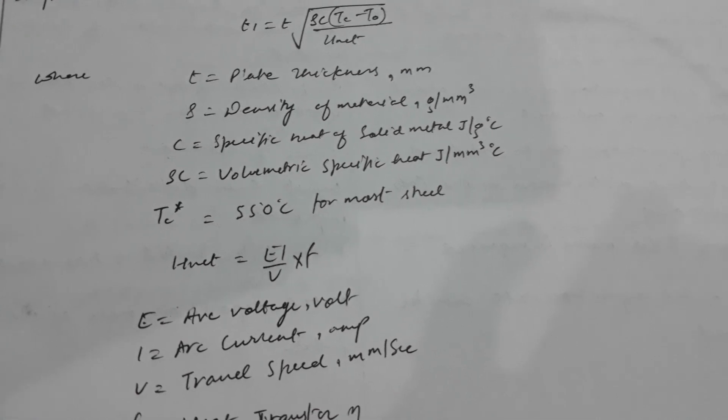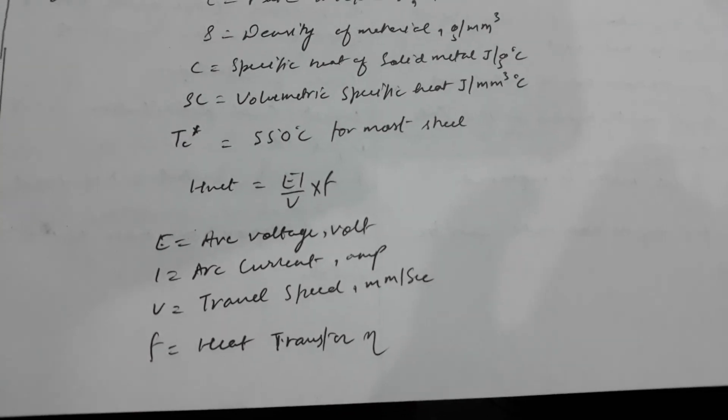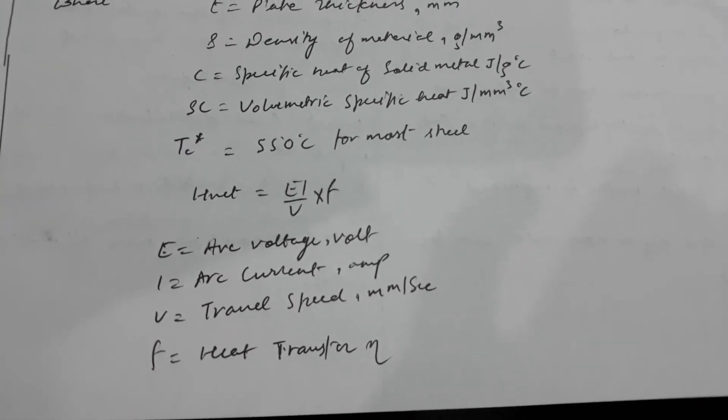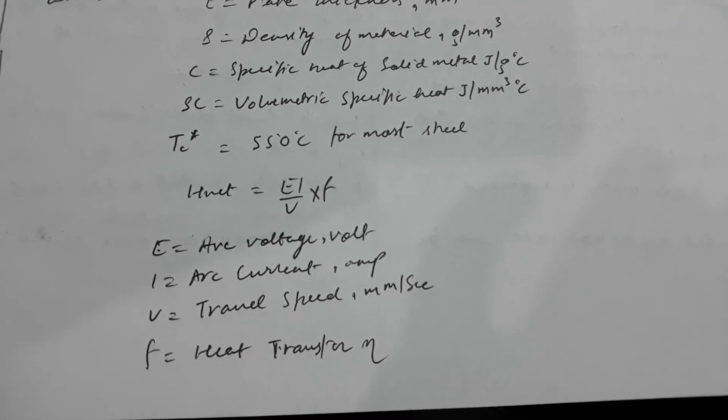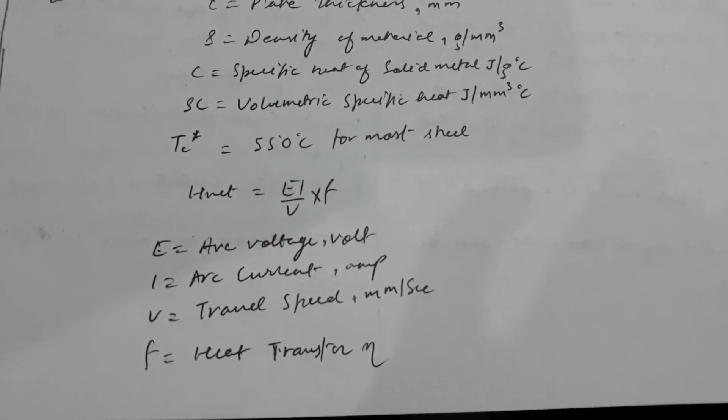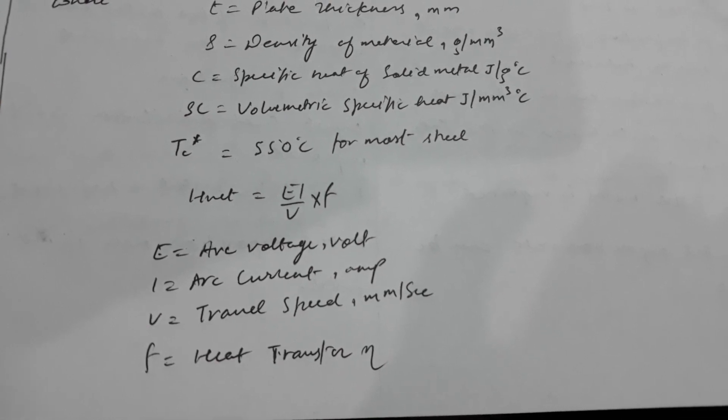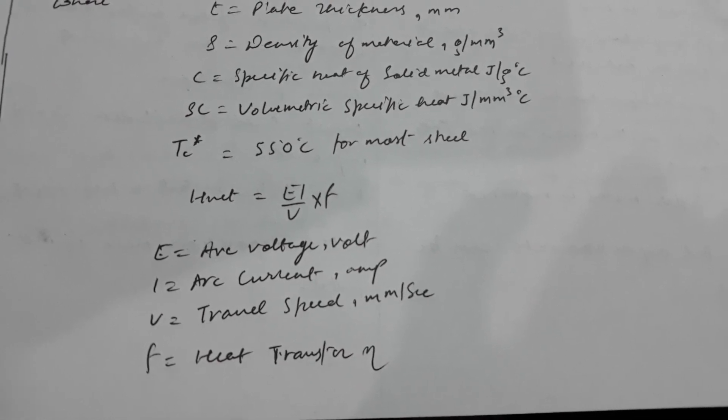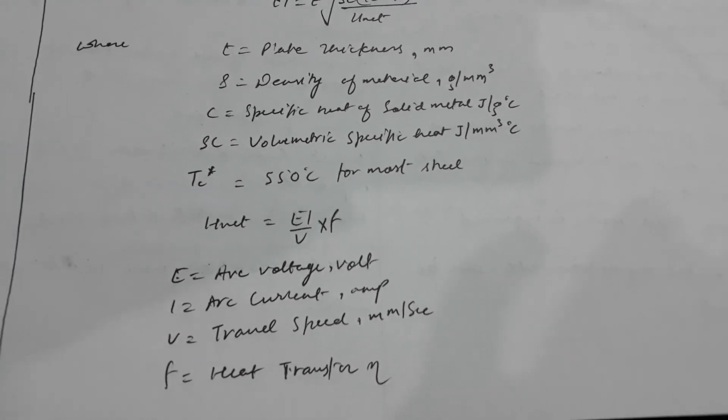Here h net is equals to E times I divided by V times F, where E is the arc voltage in volts, I is the current in amps, V is the travel speed in millimeters per second, and F is the heat transfer efficiency.